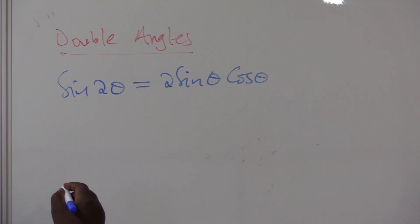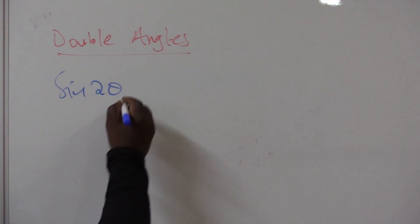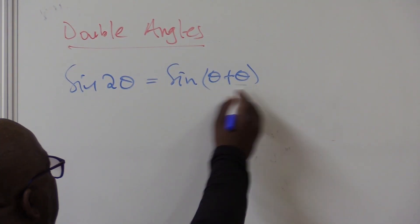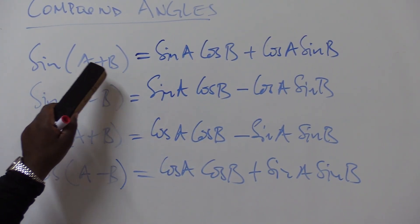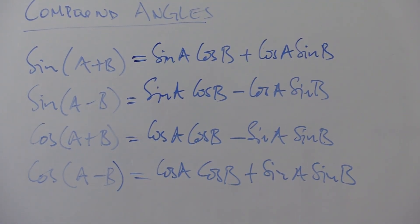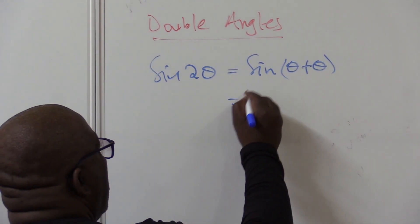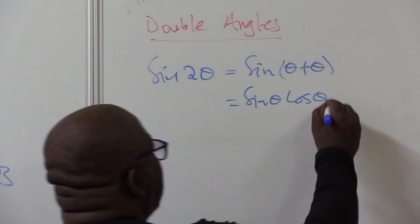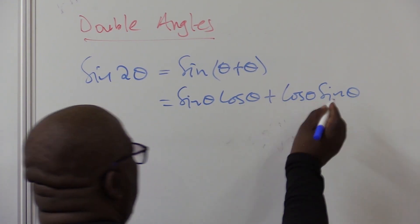Let me quickly show you where this comes from. Sine of 2-theta simply means sine of (theta plus theta). This is the same as the compound angle formula. Using the rhythm — sine cos, same sign, cos sine — it becomes sine theta, cos theta, plus cos theta, sine theta. Sine theta cos theta is the same as cos theta sine theta. So at the end we are going to have two of each — two sine theta cos theta. This is where sine 2-theta equals 2 sine theta cos theta comes from.